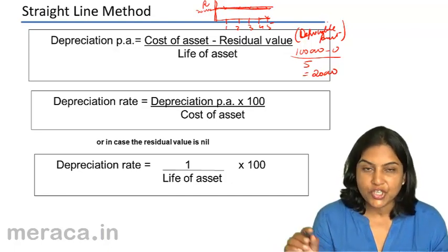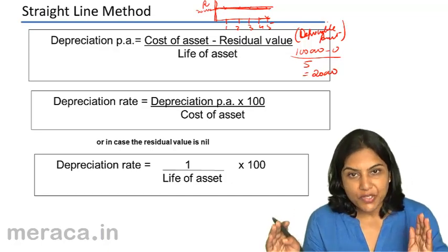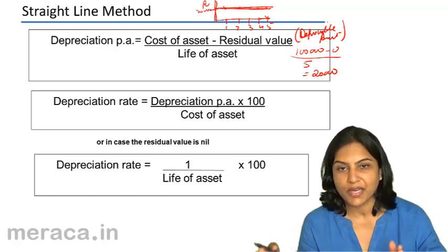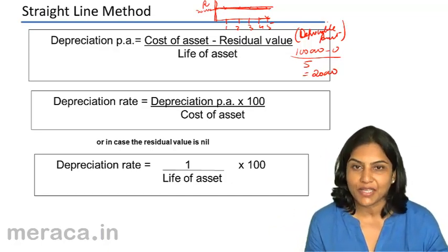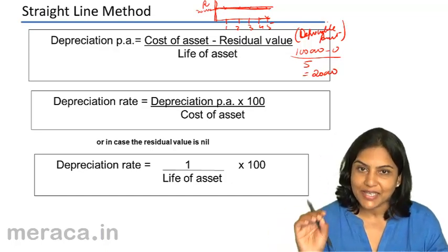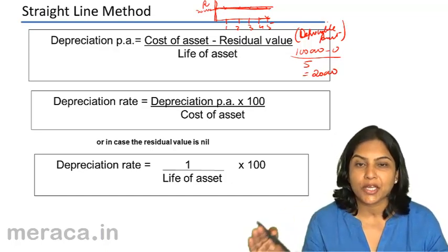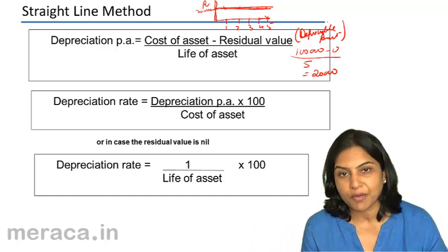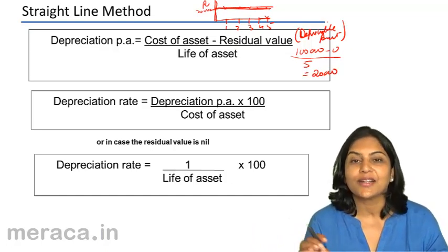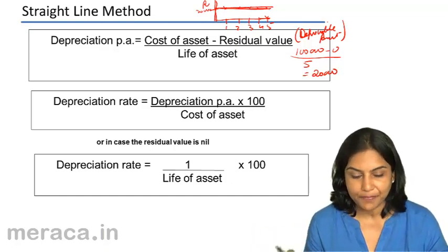Depreciation per annum is the depreciable amount — which is cost minus residual value — divided by the life of the asset. Once you have computed depreciation, there is no further computation required till the end of the life of the asset. It remains the same.